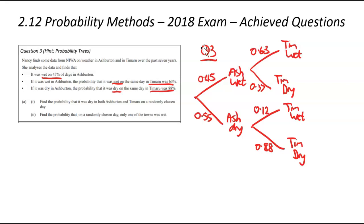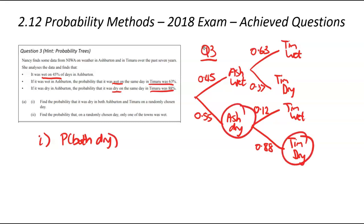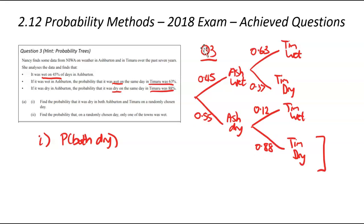Question I: what is the probability that both towns are dry? Looking at the probability tree, both being dry means Ashburton dry and Tamaru dry — that branch has 0.55 and 0.88. We multiply them together: 0.55 times 0.88. Put that into a calculator and you get 0.484. No rounding was needed for that one.